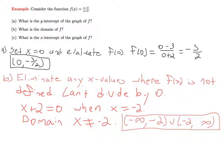And lastly, in part C, we want to identify the x-intercepts. And so in general, to find x-intercepts, we set f of x equal to 0 and solve for x.